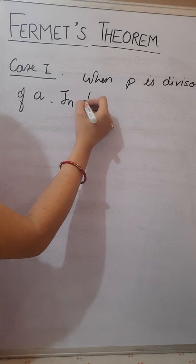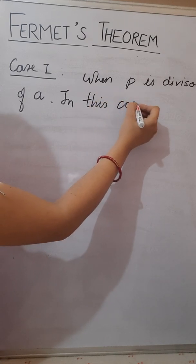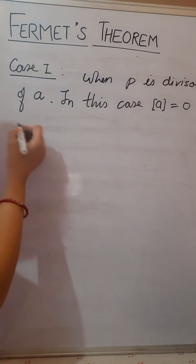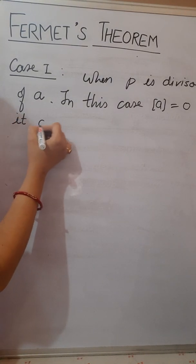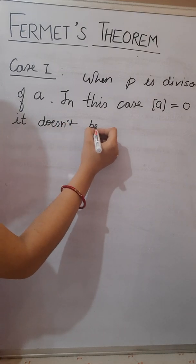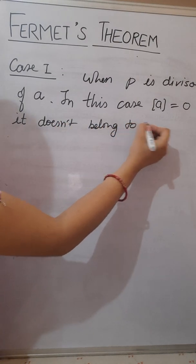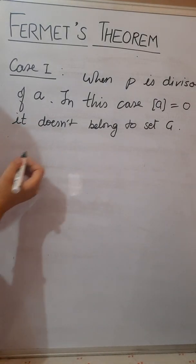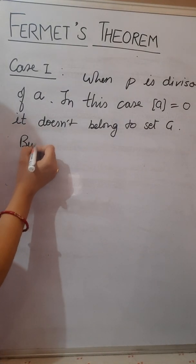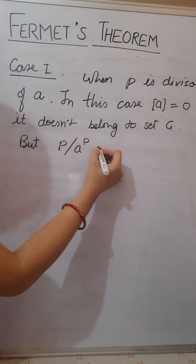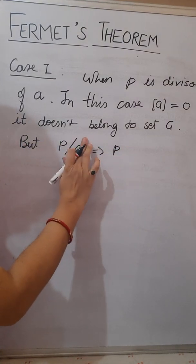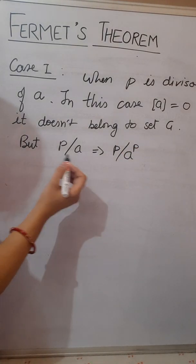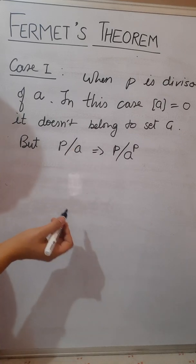In this case a is equals to 0 and it does not belong to set G as G is a set of nonzero residue classes. But as p divides a it implies p also divides a to the power p. Suppose if 5 divides 10 then 5 must divide 10 to the power p.